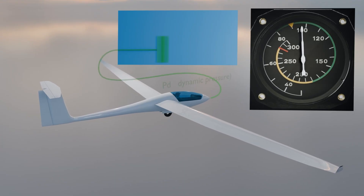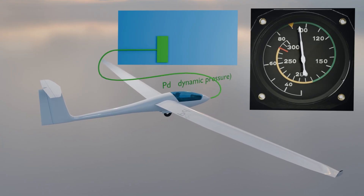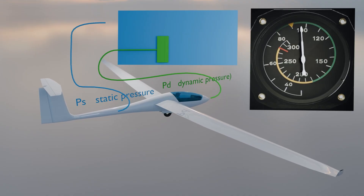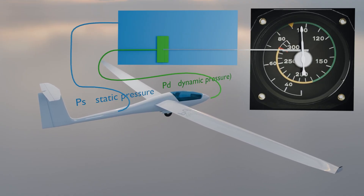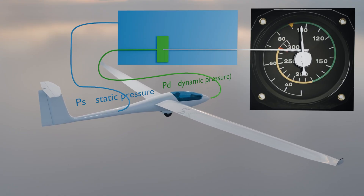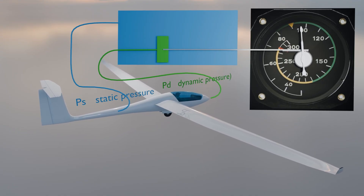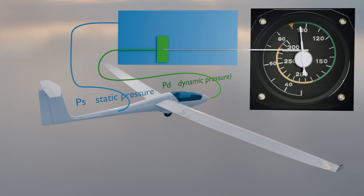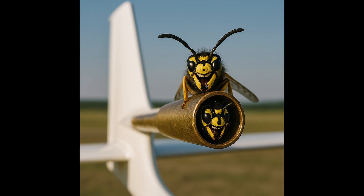So how does the instrument actually measure speed? Through dynamic pressure. The airspeed indicator is connected to both the pitot tube, which measures total pressure, and the static pressure system. The air inside the indicator's housing comes from the static system and provides reference pressure for an expandable membrane. Air flowing into the pitot tube enters the inside of the membrane, which expands more as dynamic pressure increases. This expansion is transferred via a mechanical linkage to the needle, which then shows the aircraft's airspeed.